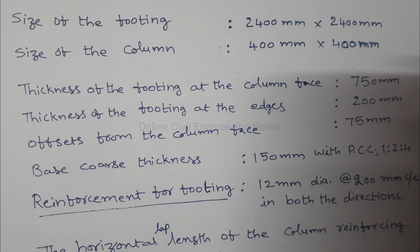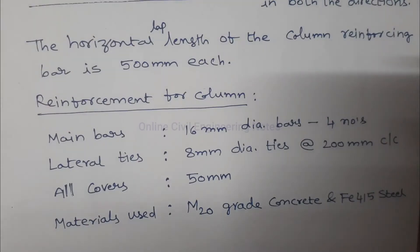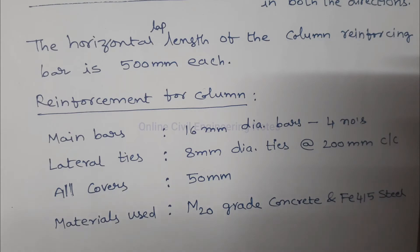Reinforcement for footing: 12 mm dia bars at 200 mm center to center in both directions. The horizontal lap length of the column reinforcing bar is 500 mm each. Reinforcement for column: main bars are 16 mm dia, 4 numbers. Lateral ties are 8 mm dia at 200 mm center to center. All covers are 50 mm. Materials used are M20 grade concrete and Fe 415 steel.